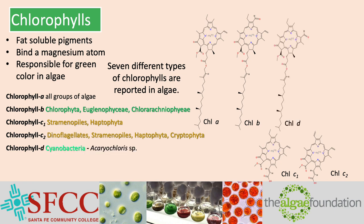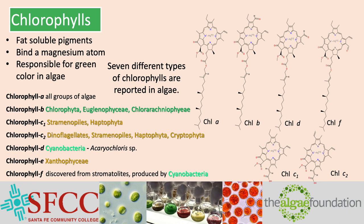Chlorophyll D was originally thought to be present in some members of the Rhodophyta, or red algae, but was more recently found to be in a cyanobacterium that lives symbiotically on the red algae. Chlorophyll E is present in the Xanthophyceae, or golden algae. Chlorophyll F was recently discovered from stromatolites, an ancient type of cyanobacterial colonial structure, and it is believed that chlorophyll F is probably produced by cyanobacteria. The arrows pointing to the differences in the chemical structures of the chlorophylls show that these are small differences, but these small chemical changes make a large difference in the region of PAR the molecule absorbs in.